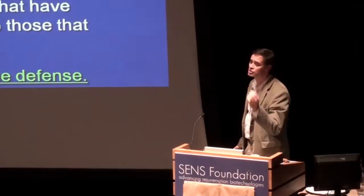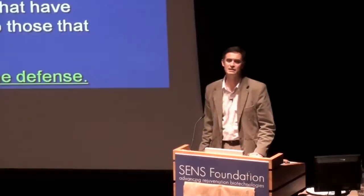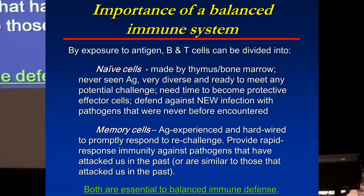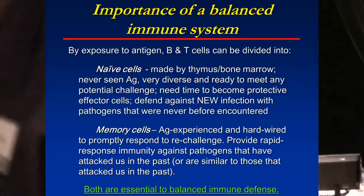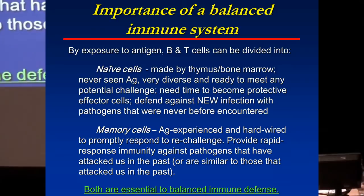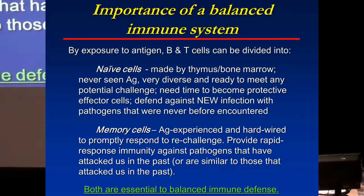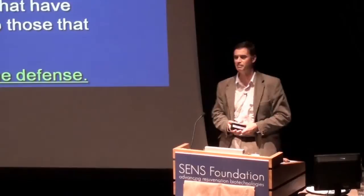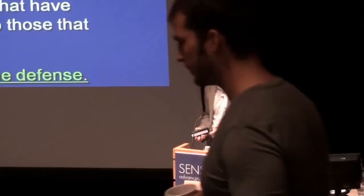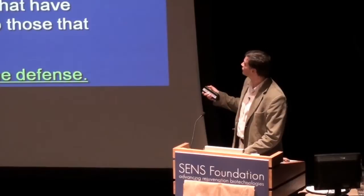By exposure to antigen, all of our adaptive immune cells — B cells and T cells — can be divided into two broad categories. Naive cells have been made in primary lymphoid organs, in bone marrow and the thymus, and have migrated to secondary lymphoid organs where they sit and wait for contact with their antigen. We call them naive because they have never seen their bug before. They're very diverse, ready to meet any challenge — like the Department of Defense, with armies deployed that may never go into combat, but that's the only way to ensure you can react to whatever comes. These are the cells that deal with new infections we have never encountered before.